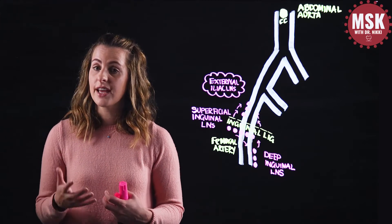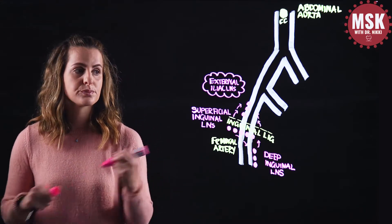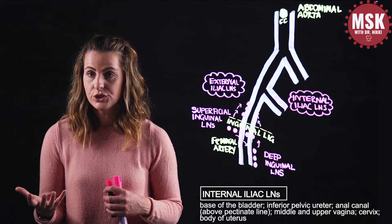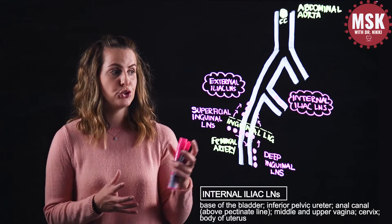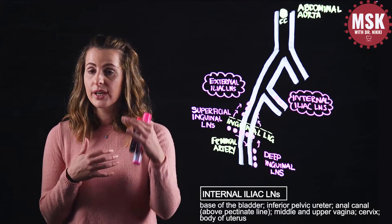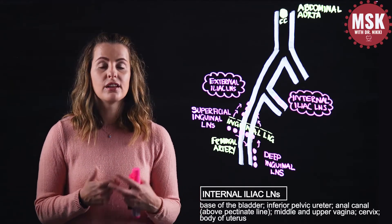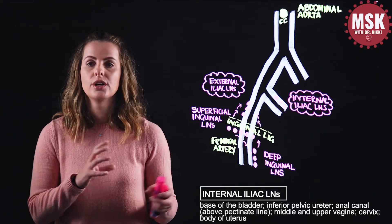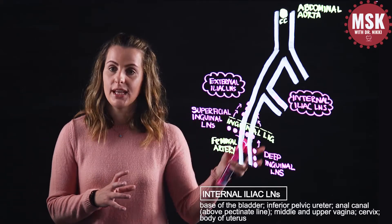In contrast, the internal iliac lymph nodes are located around the internal iliac vessels and will receive lymph drainage from different urinary structures. The base of the bladder sends its lymph to the internal iliac nodes, as do the inferior pelvic ureters, the anal canal superior to the pectinate line, and the upper and middle parts of the vagina. The cervix and the inferior aspect of the body of the uterus also drain to the internal iliac nodes. In other words, regions of the uterus and vagina not draining into the external iliac nodes will drain into the internal iliac nodes.